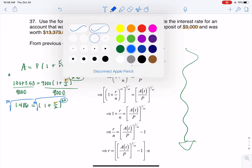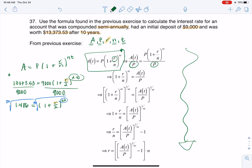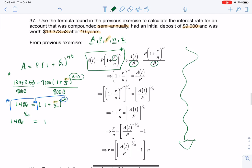Now, in taking the 20th root, we can also think of this as having a rational exponent. So this is me saying I'm going to take 1.486 to the 1 over 20th power, and that's going to leave me with 1 plus R over 2 on this side.